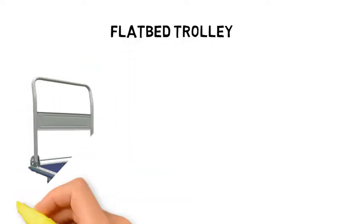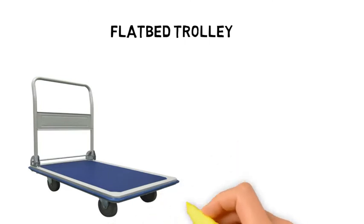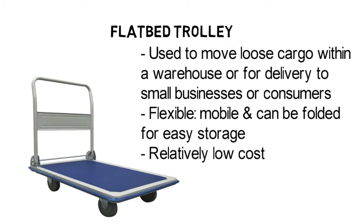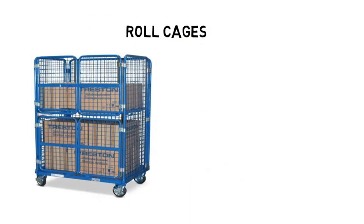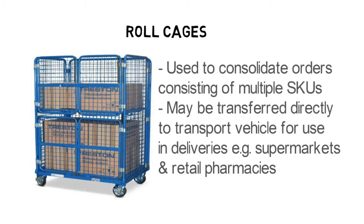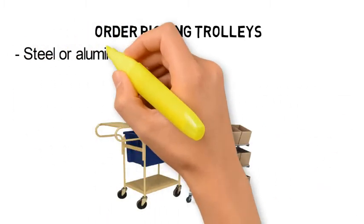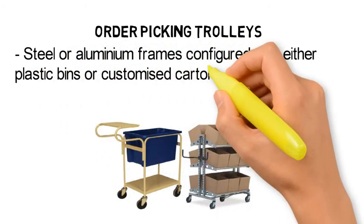Flatbed trolleys are used to move loose cargo within a warehouse or for delivery to small businesses or consumers. They are very flexible as they are light and can be folded for easy storage. They are also relatively low in cost. Roll cages are used to consolidate orders consisting of multiple SKUs and have the advantage of being suitable for direct transfer to transport vehicles for use in deliveries. Order picking trolleys are usually made of steel or aluminium frames configured with either plastic bins or customised cartons for small order picking.